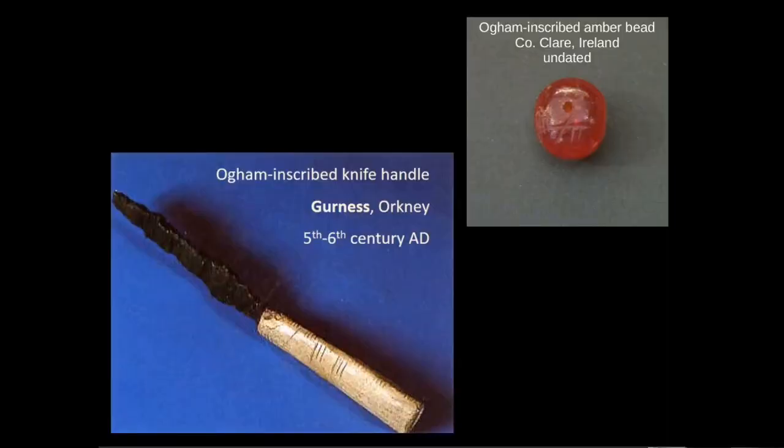Ogham inscriptions are sometimes also found on smaller portable objects of different types of materials such as bone. As you can see, an example here from Orkney of an Ogham inscribed knife handle made of bone, and again an Ogham inscribed amber bead from County Clare. However, these types of objects are in very small numbers compared to the number of Ogham stones around the country, which is approximately 360 in total.